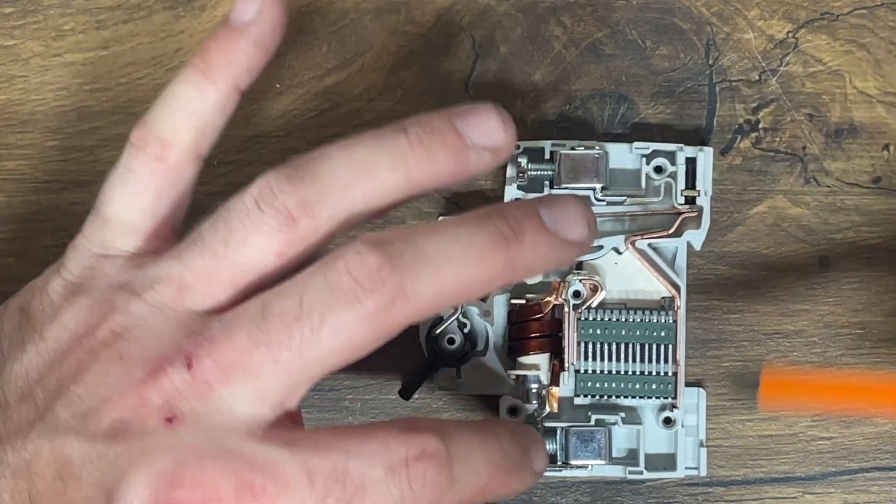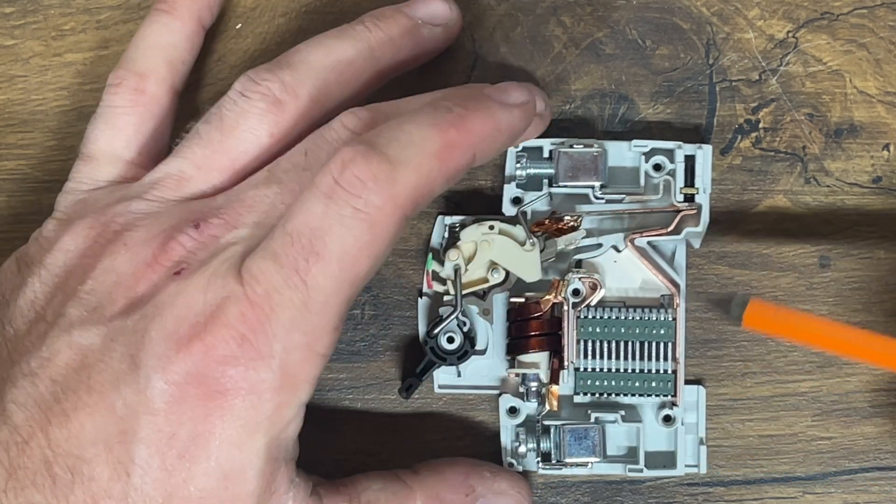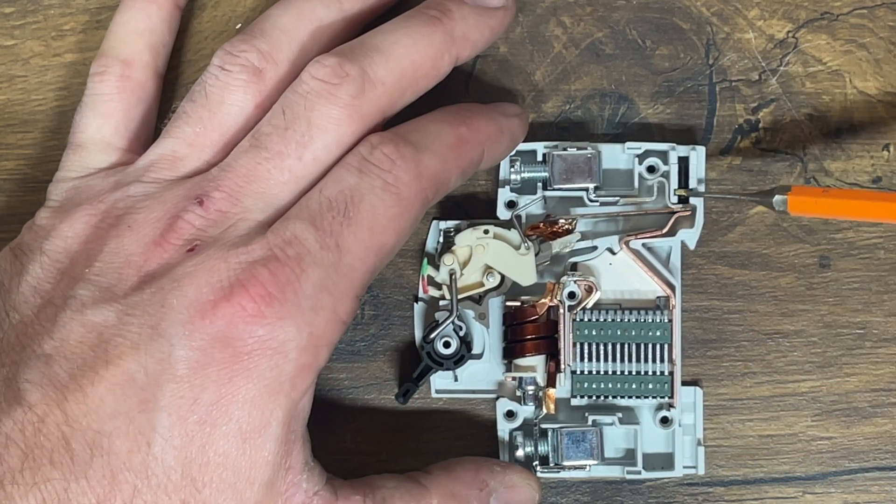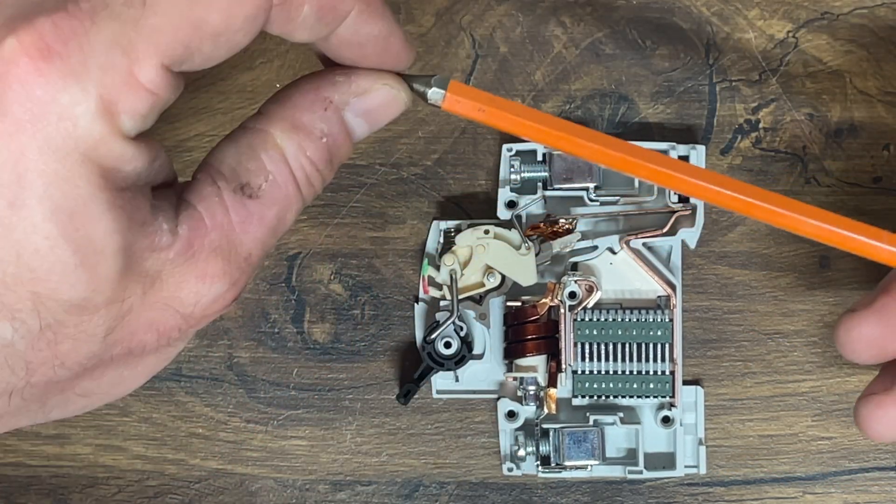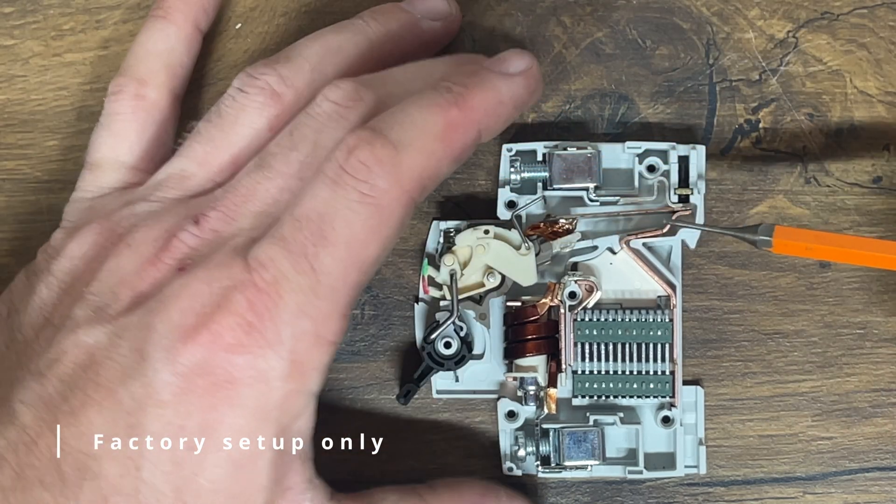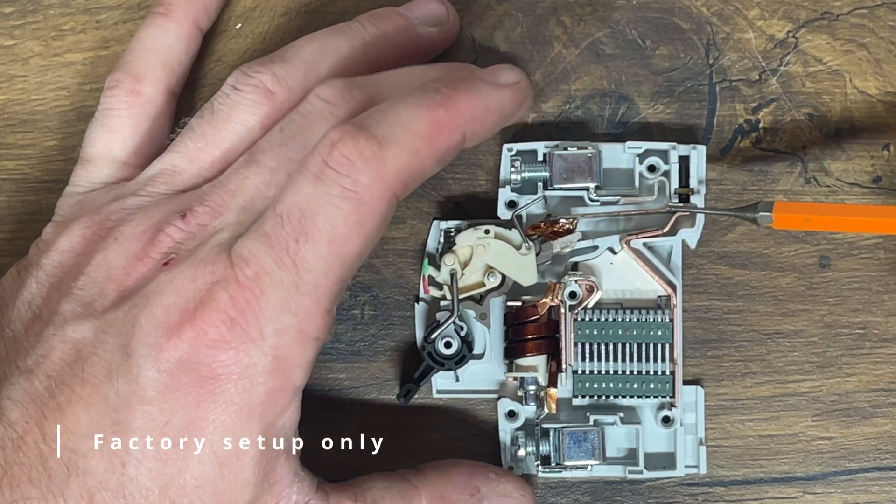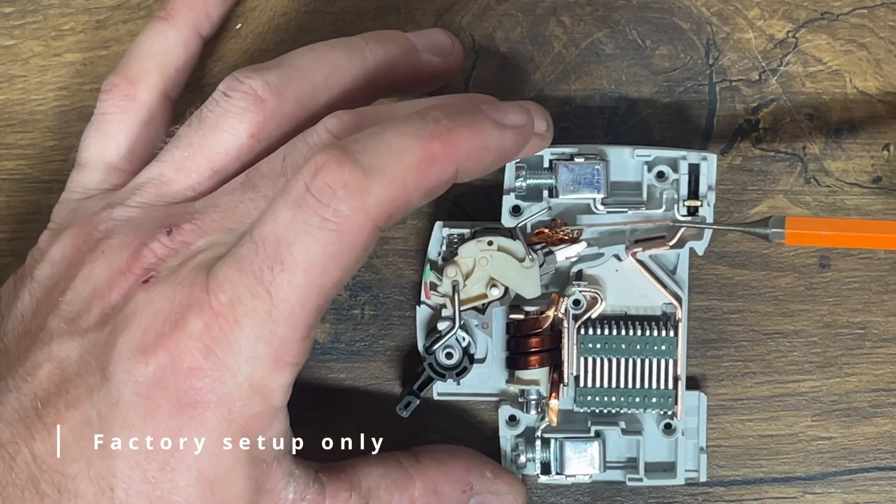So we've got our two terminals, one of which we'd expect to connect to the bus bar, the other one to our cable. Then we have our adjustment screw, which sets the level of where we expect that biometallic strip to be for its operation.